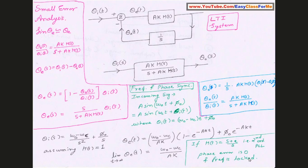This is how a phase-locked loop works. In this explanation, we have derived the general expression for the phase error and the input-output relationship under small error analysis where the system behaves as an LTI system. We have shown that frequency and phase synchronization can be achieved even with an all-pass filter. With a second-order PLL using H(s) = (s + a)/s, perfect phase and frequency lock with zero phase error is achieved.